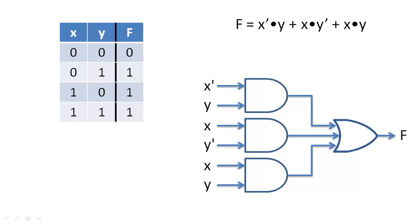If you are observant though, you might have realized that this is the truth table for the OR operation. Not surprisingly, this expression yields a much simpler circuit and is the minimal circuit for this truth table.